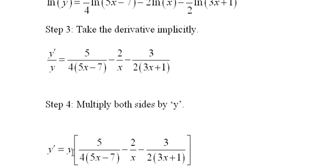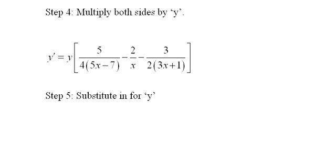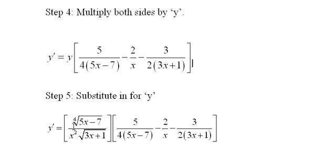but we can make this all in terms of x if we want because we know what y is from the expression in the very beginning. y equals, there it is, substitute in for y. y equals this fourth root of five x minus seven over x squared times the square root of three x plus one. So you put that in front, and there you've taken the derivative.